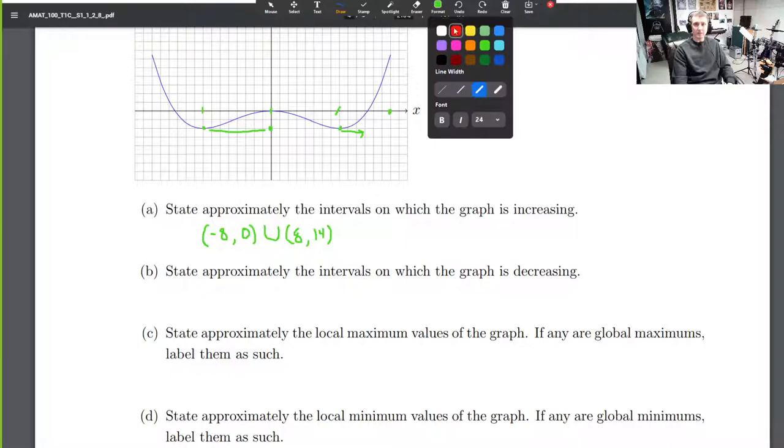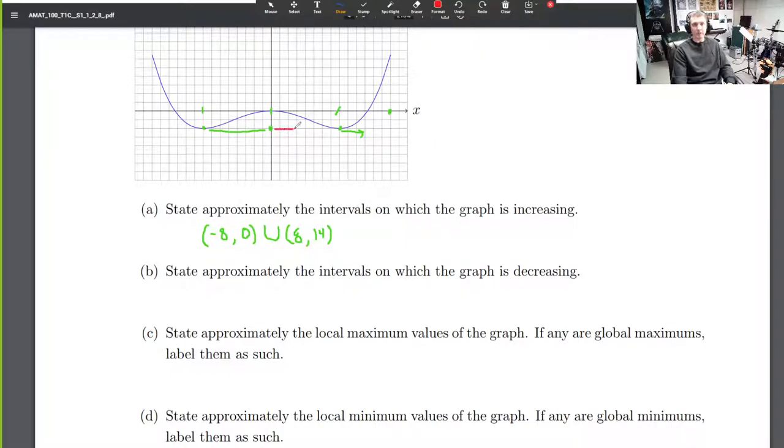Where is it decreasing? The in-between. So that's 0 to 8. And negative 8 to negative 9, 10, 11, 12, 13, 14. Okay. So it's decreasing on these two intervals.